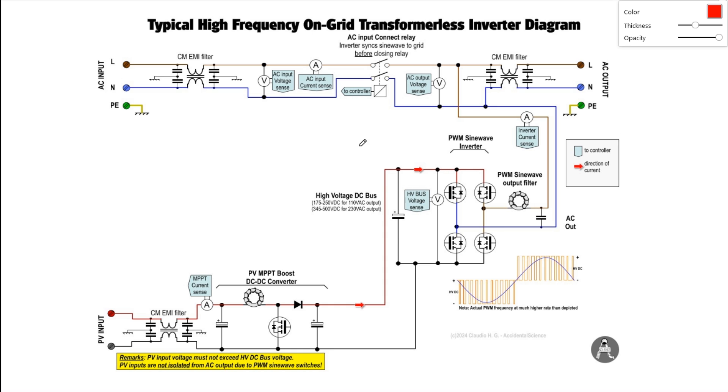And then here we have the core part of the inverter which is made of these four transistors that are switches that commutate the high voltage DC bus here into an AC waveform through a pulse width modulation. As you can see here this is for illustrative purposes only, it is not the actual frequency which is much higher.